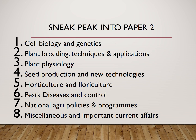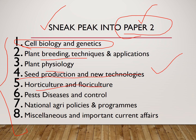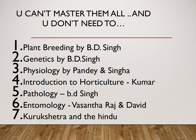I'll give a brief sneak peek into how Paper 2 is broken out. We've split the topics into 8 main lessons: Cell Biology and Genetics, Plant Breeding, Physiology, Seed Production and New Technologies, Horticulture and Floriculture, Pest Diseases and Control, National Agriculture Policies and Programs, and a final chapter covering any remaining topics plus important current affairs.